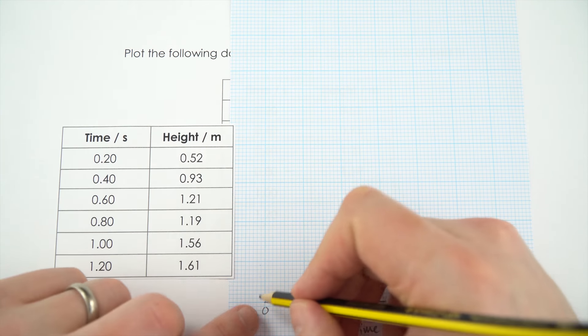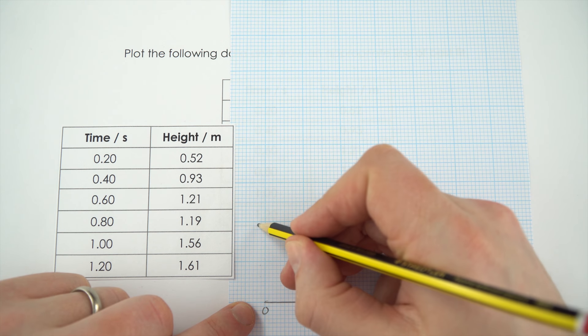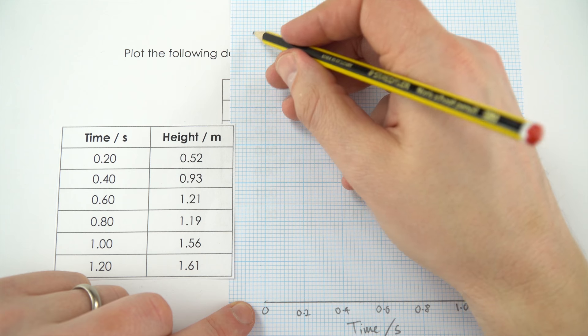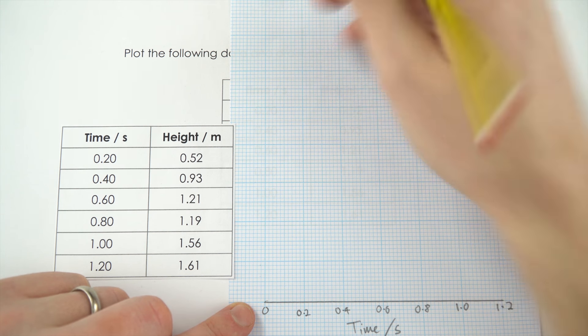And so what I'm going to say is that if this is 0, then that's 0.2, 0.4, 0.6, 0.8, 1, and then 1.2, 1.4, 1.6. Yeah, so it can definitely fit into the page.